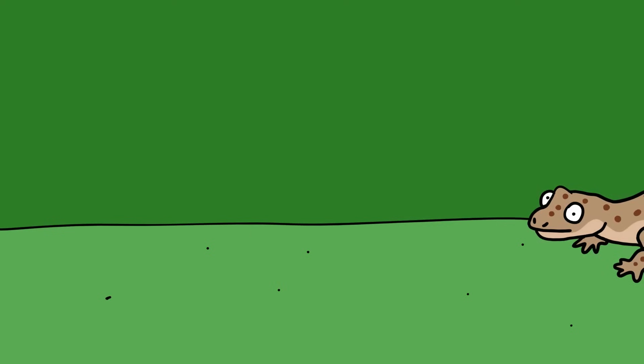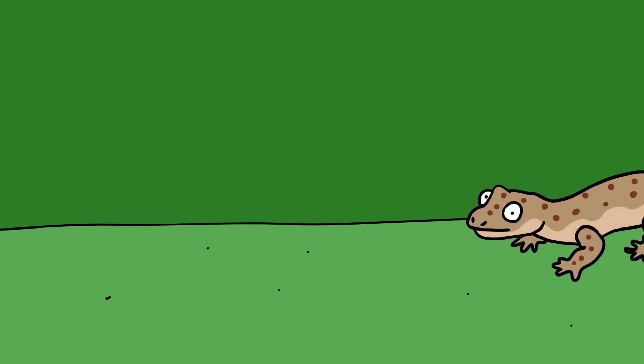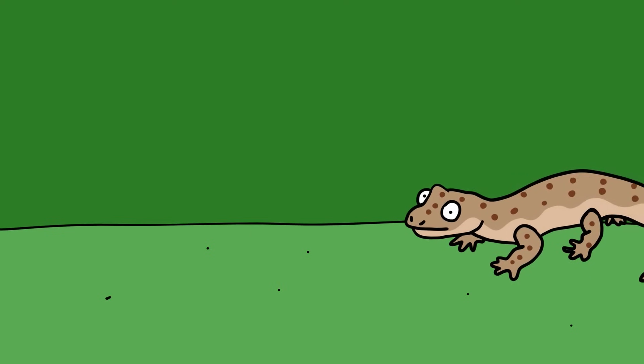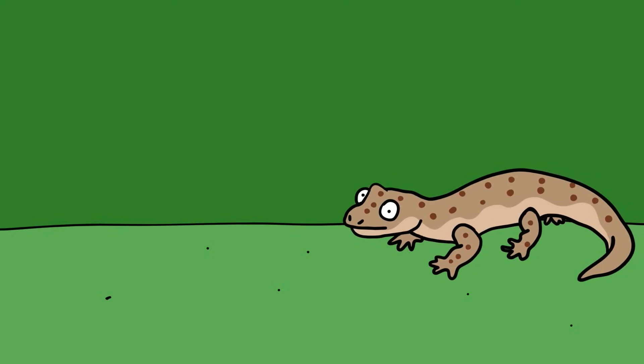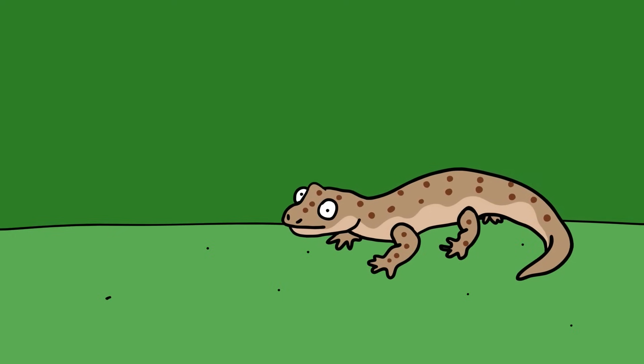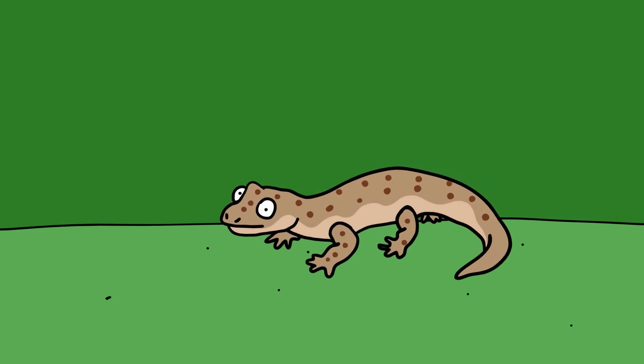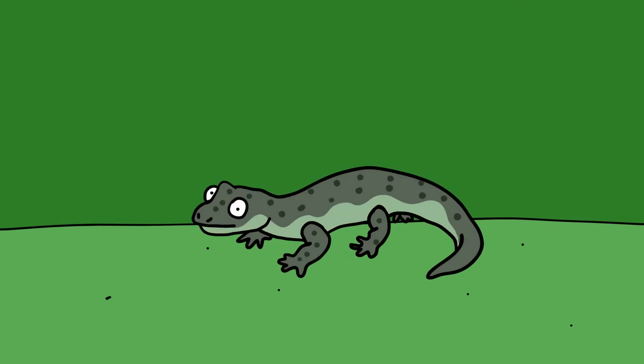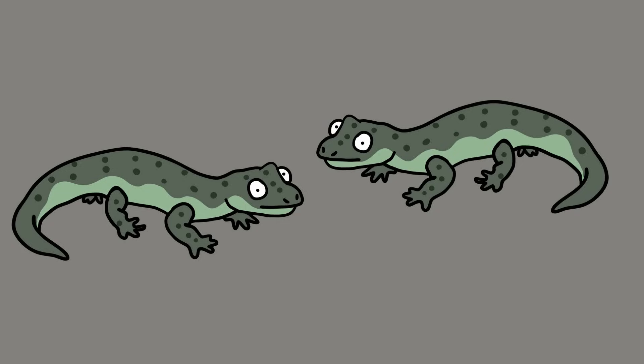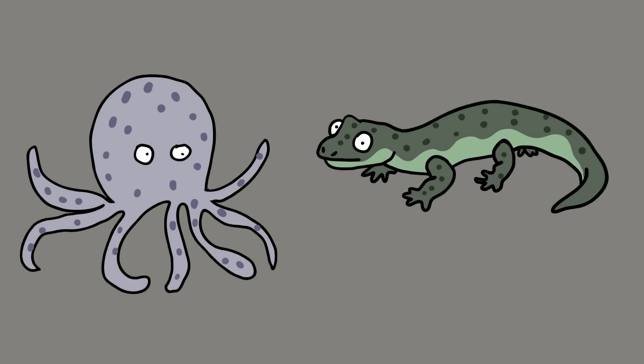But chameleons aren't the only lizards that have mastered the art of camouflage. The Moorish gecko is a common lizard that can be found in Europe, Africa, North America, and Asia, either in coastal areas or urban environments. Like the chameleon, it can change color to match its surroundings. But unlike the chameleon, or any other land animal for that matter, the Moorish gecko does this by using the same technique employed by octopuses and cuttlefish.